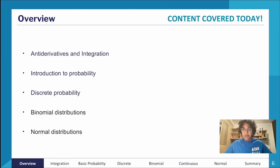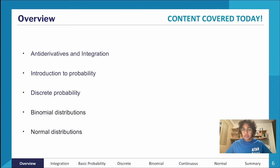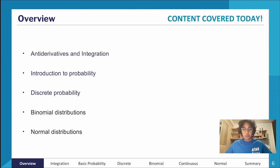An overview of what we're covering today: first, integration and antiderivatives — my favorite part of Unit 4, which finishes off calculus. Then we'll talk about probability, starting with an introduction covering prerequisite knowledge from year 10 and 11. After that, discrete probability, then binomial distributions, and finally continuous and normal distributions.